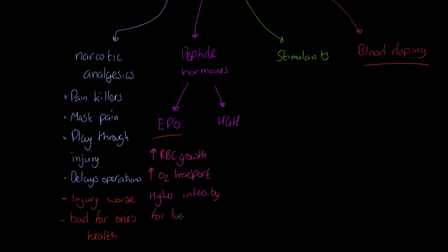With increased oxygen transport, athletes get the capacity to train or compete at higher intensity for longer. An athlete in a race walk, for example, can go faster and at higher intensity for longer without the negative impact of lactic acid developing as much. Of course there are negatives: apart from being illegal, EPO increases blood pressure, which could be a precursor to hypertension.